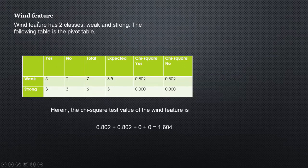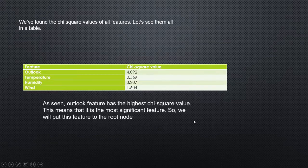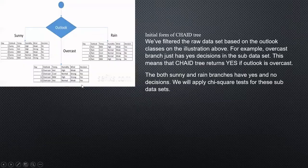For the wind feature, after computing chi-square yes and chi-square no, the total is 1.604. Now we prepare a summary table for all four attributes: outlook = 4.092, temperature = 2.569, humidity = 3.207, wind = 1.604. The highest value is outlook at 4.092, so outlook becomes the root node.